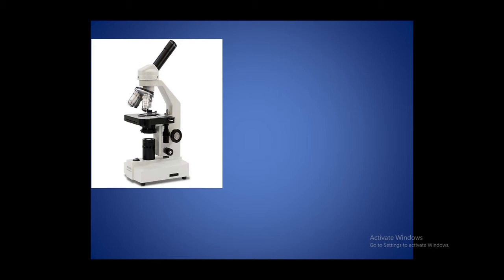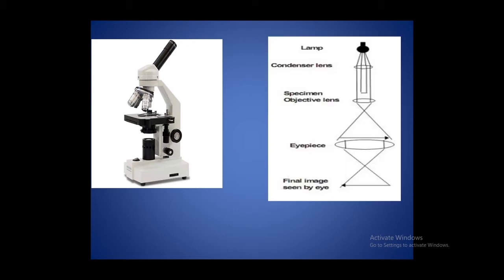Now let us look at the light microscope which you must have seen in your biology lab. Let us see how it works. If you see the pathway of light — how the light passes through the light microscope and how we observe the specimen — the first component is the lamp, which is the light source, and this light comes under visible radiations.